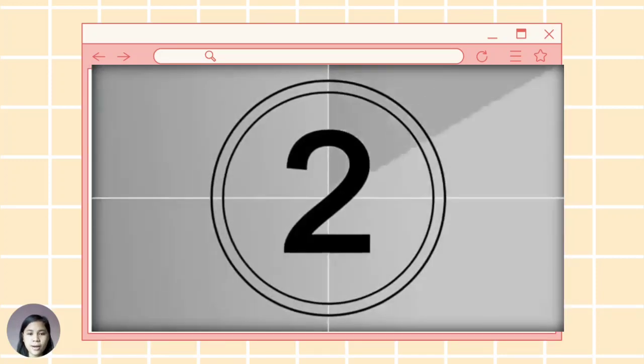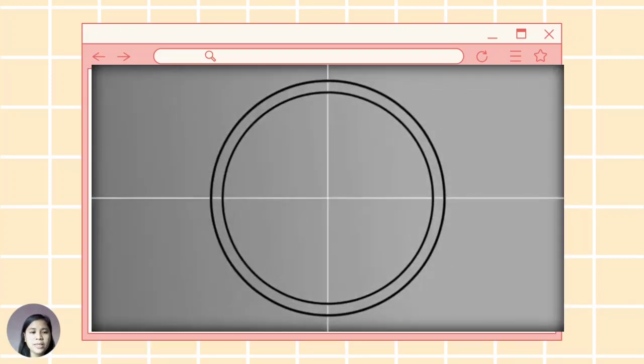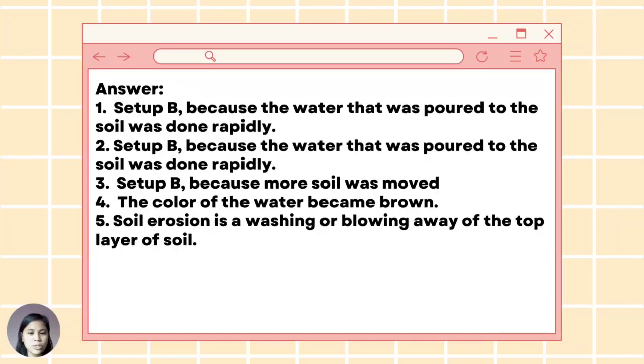And these are the answers. For number one: Setup B because the water that was poured to the soil was done rapidly. For number two: Setup B again because the water that was poured to the soil was done rapidly. And number three: Setup B because more soil was moved. And number four: The color of the water became brown. And number five: Soil erosion is the washing or blowing away of the top layer of soil.